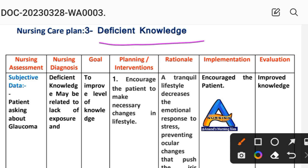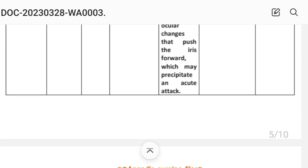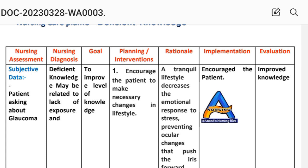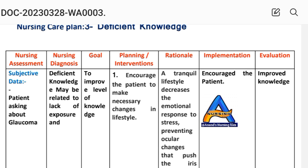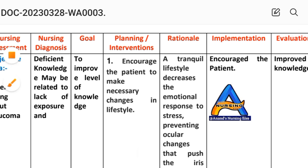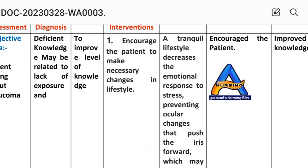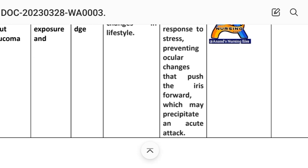Nursing Care Plan Number 3: Deficient Knowledge. Nursing assessment — subjective data: patient asking about glaucoma. Objective data: assess the level of knowledge. Nursing diagnosis: deficient knowledge related to lack of exposure and misinterpretation of information. Goal: to improve level of knowledge. First intervention: encourage the patient to make necessary changes in lifestyle. Rationale: a tranquil lifestyle decreases the emotional response to stress, preventing ocular changes that push the iris forward, which may precipitate an acute attack.